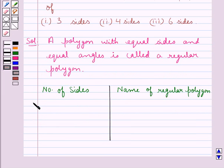Now, if the number of sides of the polygon is 3, then that regular polygon is called an equilateral triangle.